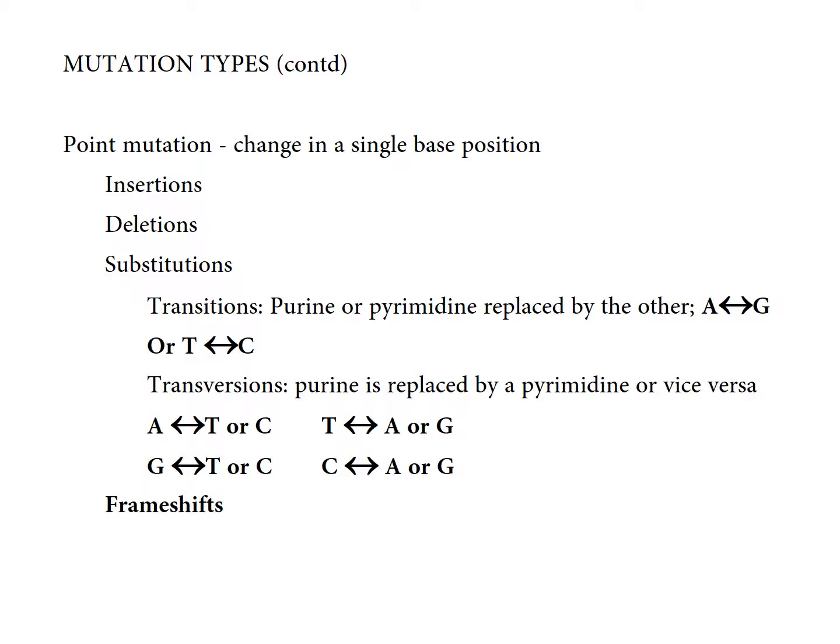An insertion means another base is inserted, changing the way the information is read. A deletion is the loss of a single base — for example, with the sequence ATTG, if you lose the second base, thymine, you only have ATG. You would not get the same product as before; you shift the reading frame, and you could have substitution of one amino acid for another, or even a truncation of that protein.